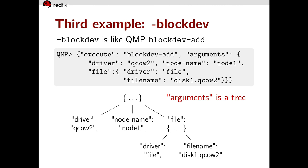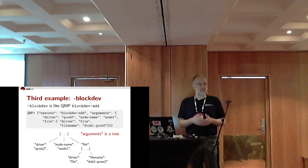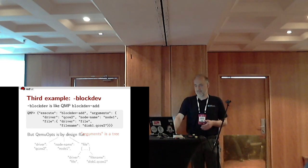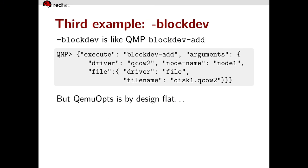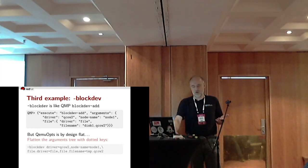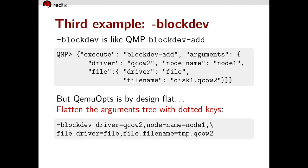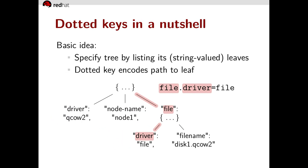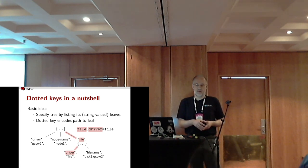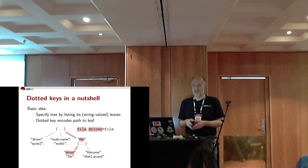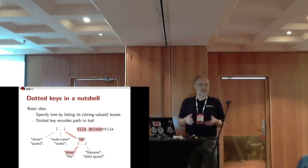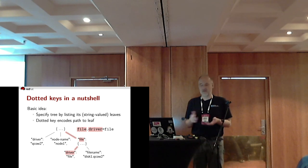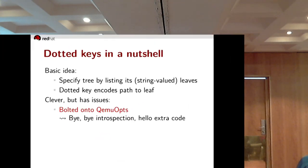Third example: dash-blockdev. Dash-blockdev is a command line equivalent to QMP's blockdev-add. Blockdev-add's argument is a tree, but QEMUopts is by design flat. So what do we do? We flatten the argument tree with dotted keys. Dotted keys look like this on the command line: the basic idea is we specify the tree by listing its string-valued leaves, and a dotted key encodes a path to a leaf. So file.driver=file means the root of the tree is an object with member 'file' which is an object with member 'driver' whose value is the string 'file'.